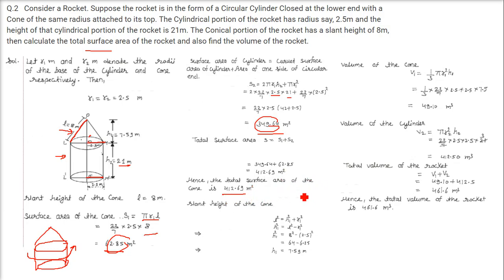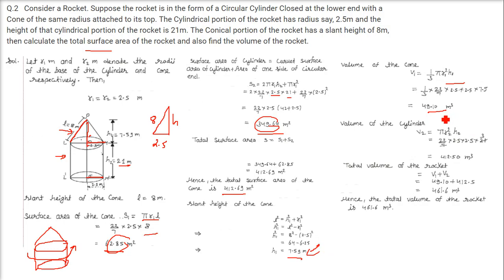To find the volume, we first calculate the cone height using: h = √(8² − 2.5²) = 7.59. The volume of the cone is (1/3)πr²h = 49.10. The volume of the cylinder is πr²h with radius 2.5 and height 21. Adding the cone and cylinder volumes gives the total volume of the rocket: 461.6 cubic meters.